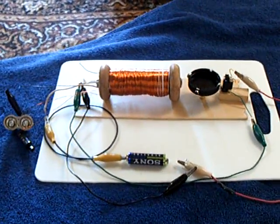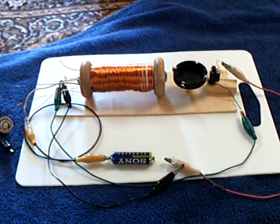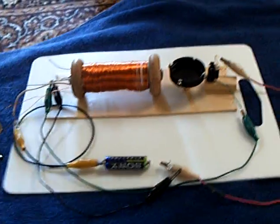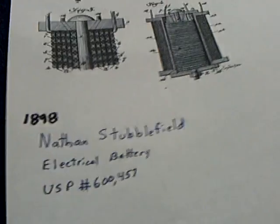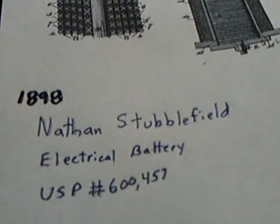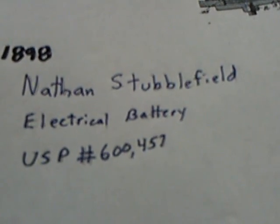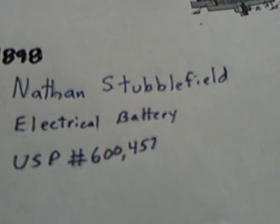Okay, well this is back to the Nathan Stubblefield battery, the earth battery that Nathan Stubblefield was granted a patent on back in 1898. That's patent number 600457 called